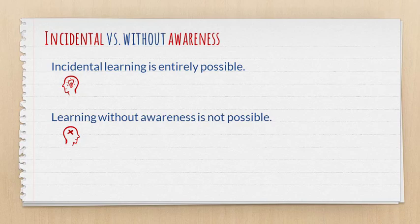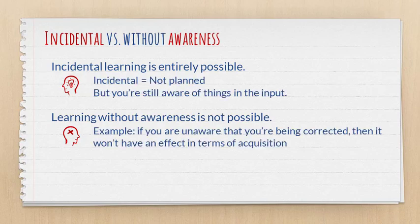For the noticing hypothesis, it is possible to learn incidentally, but it is not possible to learn without awareness. What Schmidt is saying is that incidental learning means that it's not planned. So for example, if you're just reading a book, you can learn from noticing things in that input. And that is incidental learning because it was not planned.